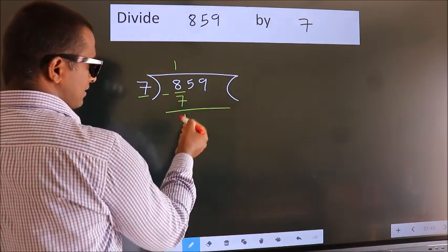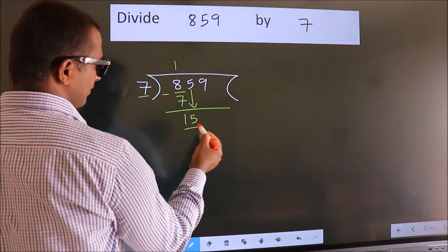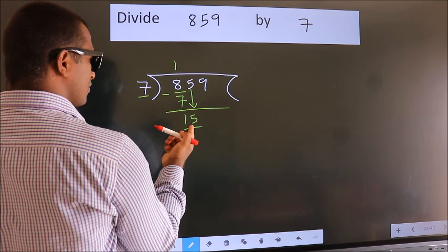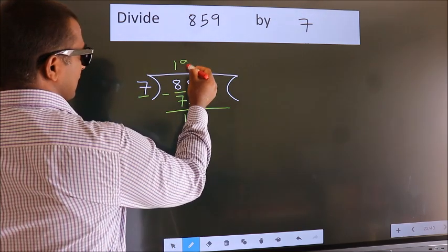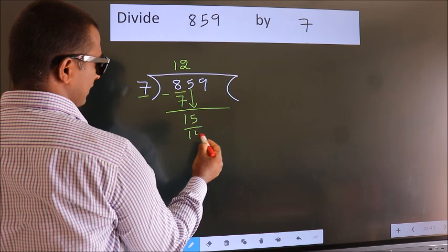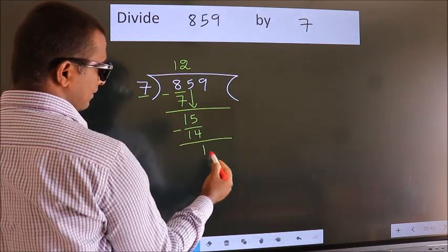After this bring down the beside number. So 5 down. So 15. A number close to 15 in 7 table is 7 twos 14. Now we subtract. We get 1.